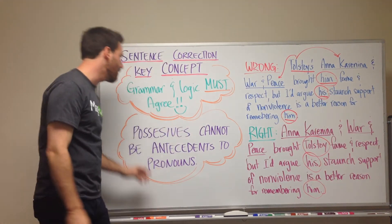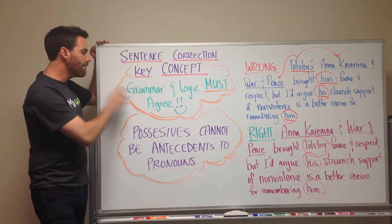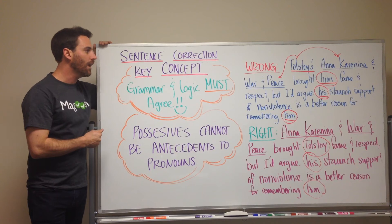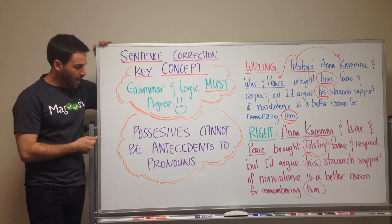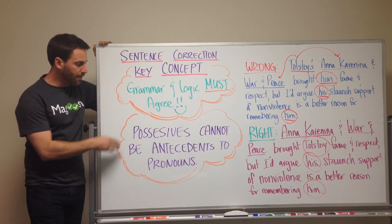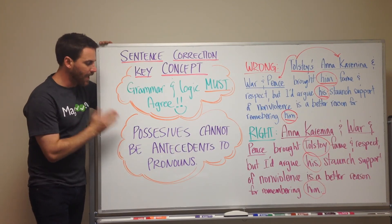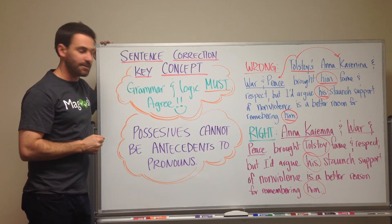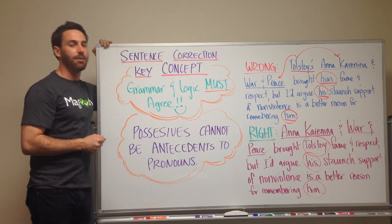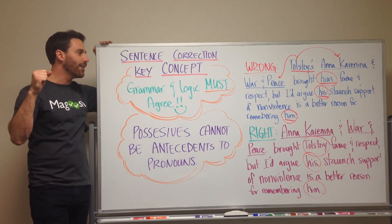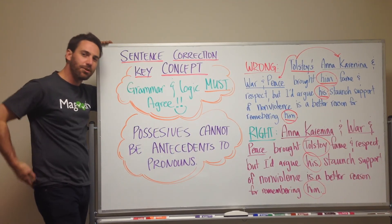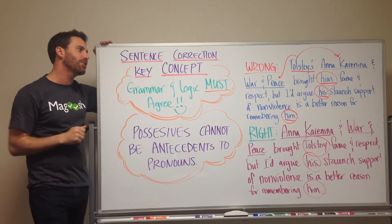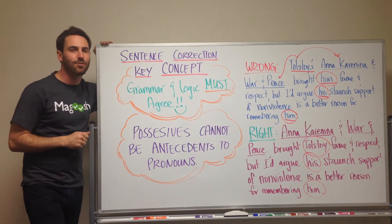Key concept: grammar and logic must agree in sentence correction, and possessives cannot be antecedents to pronouns. You've got a good fact to put in your back pocket — take it out when you're solving sentence correction questions.